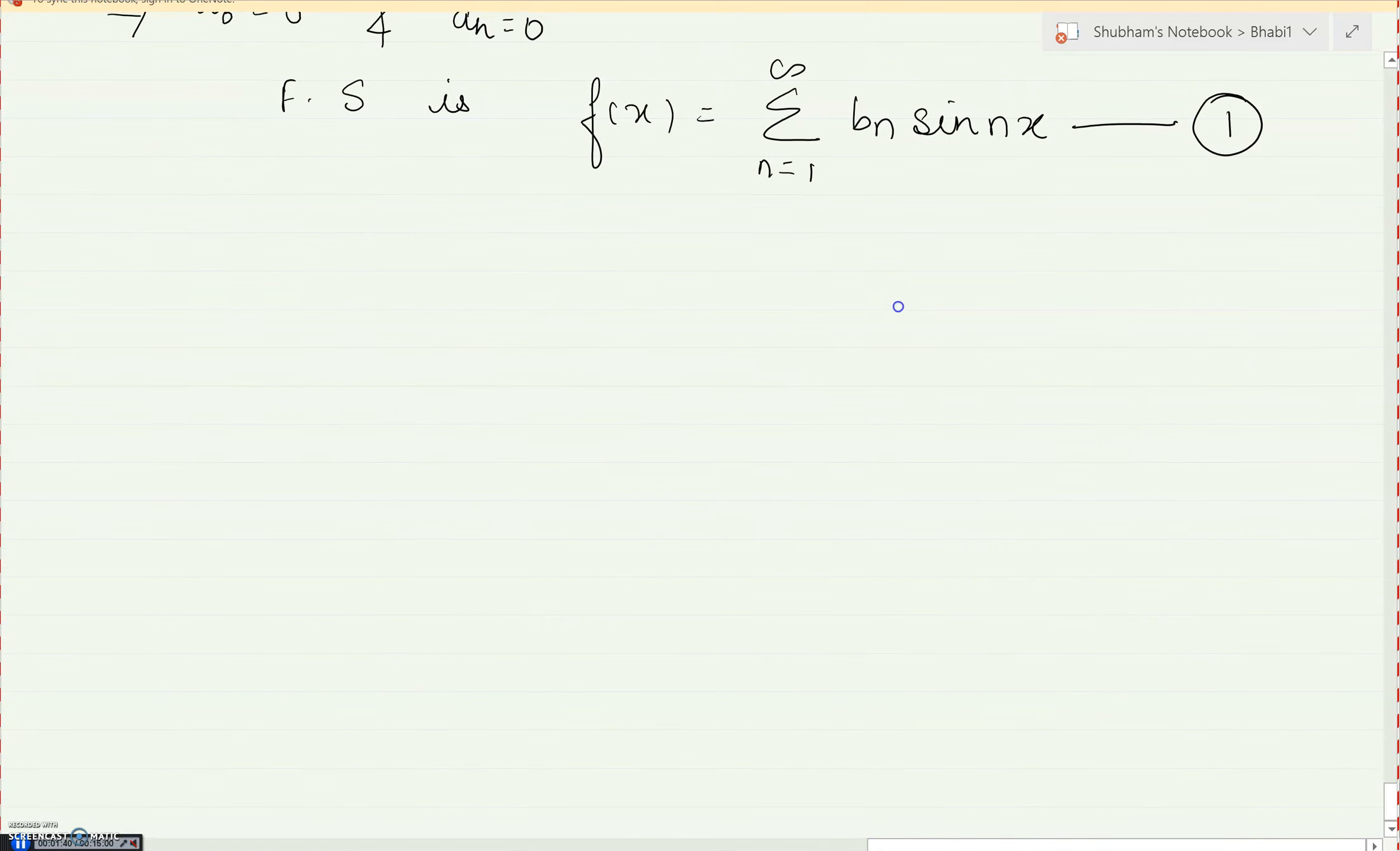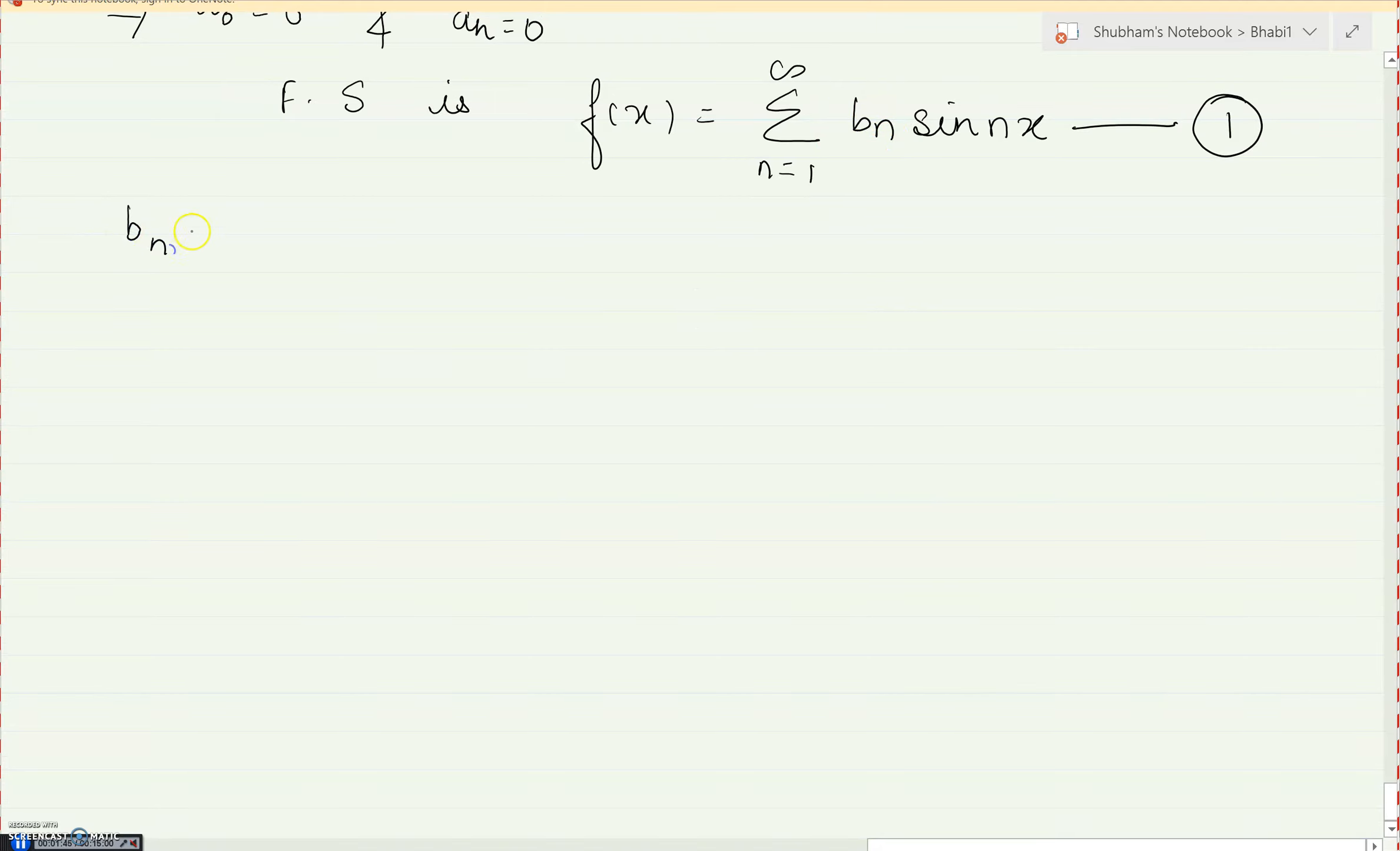Only this is my Fourier series because a0 and an have become 0 already. So my equation 1 will be like this. So now what remains is just finding this bn. So let us find the bn first. So bn formula is you can write 1 upon pi integral f of x sin nx. We have seen this in the range for 0 to 2 pi. This was my formula, and the limits of integration were 0 to 2 pi.